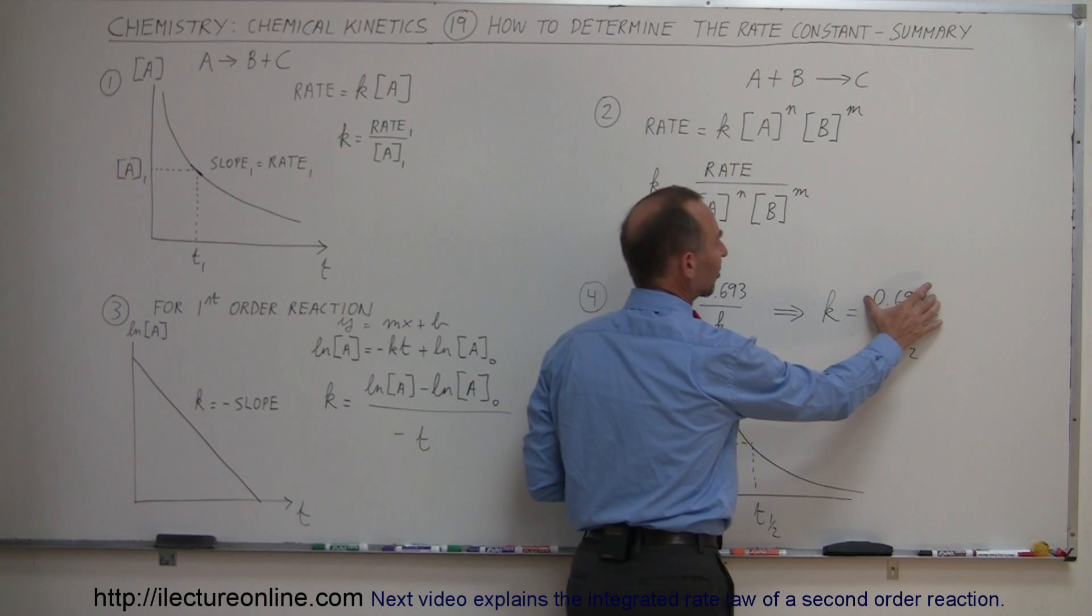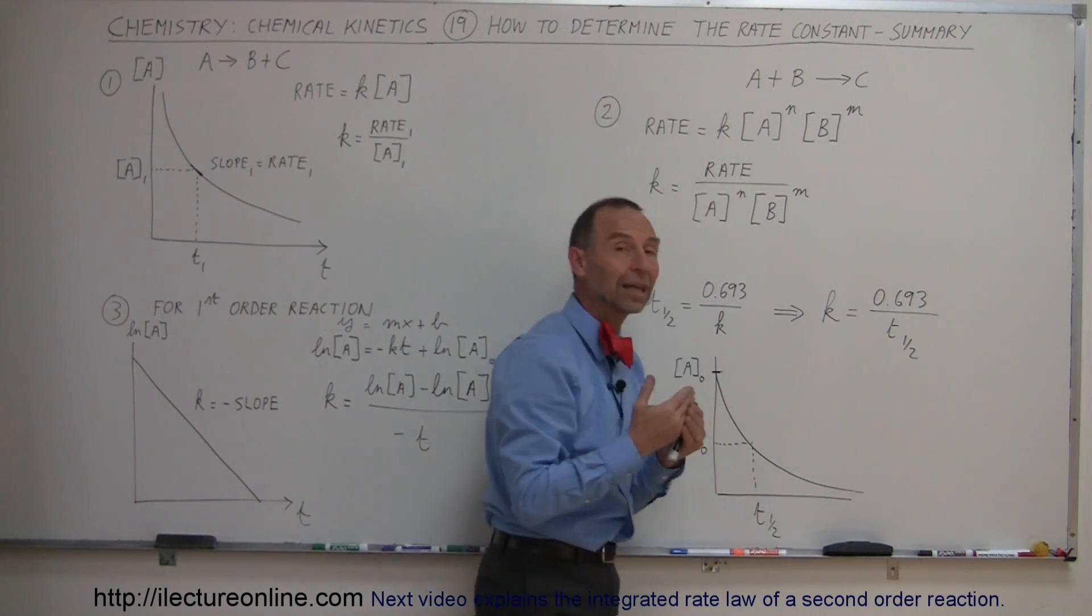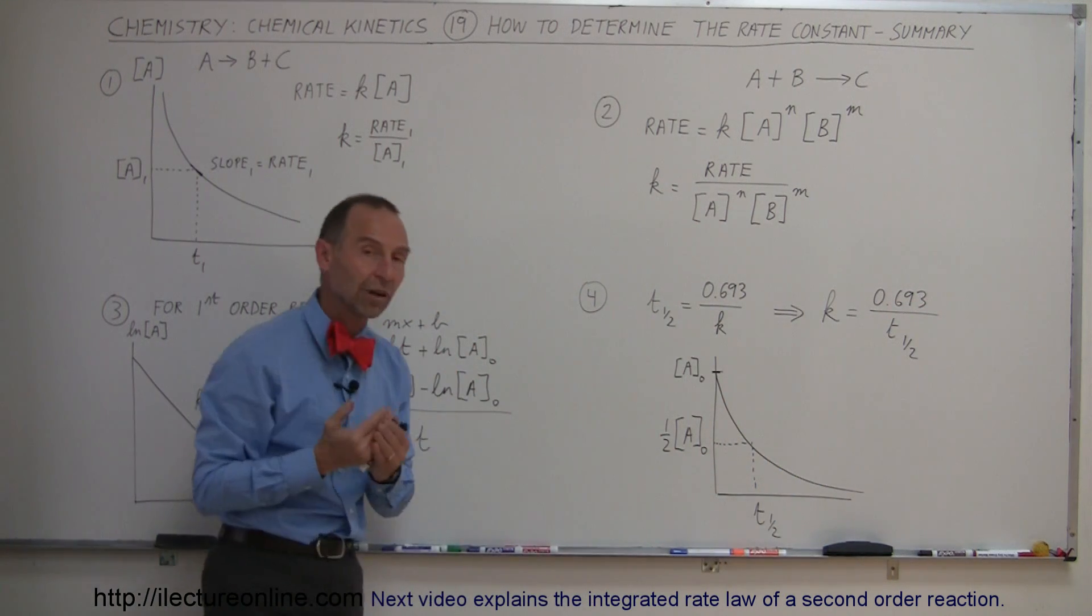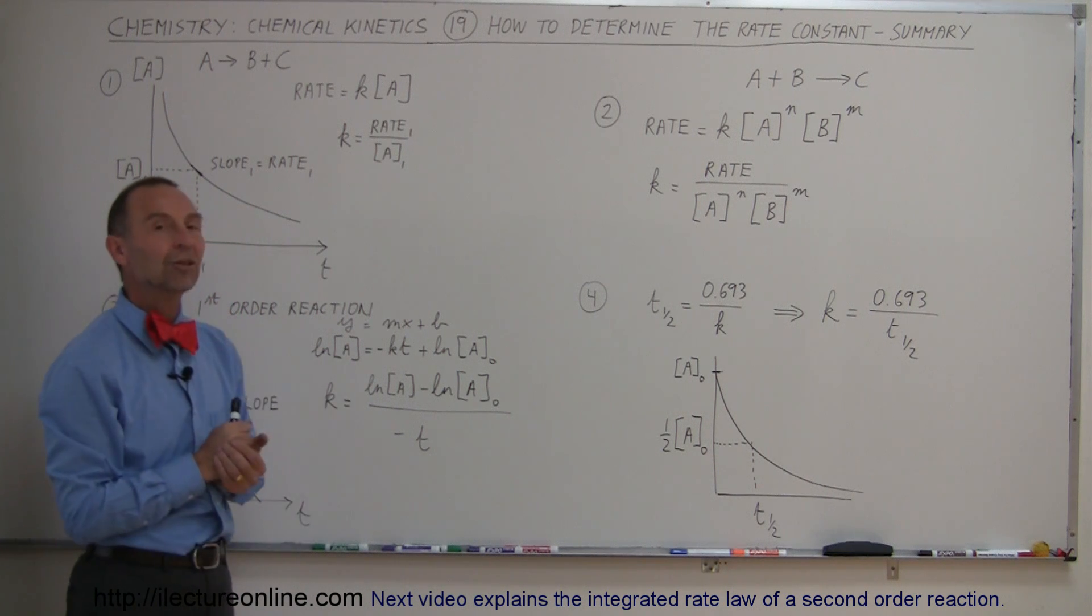We solve that for K, so we get 0.693 divided by how much time it took to get to only half of the original concentration of the reactant, and from that we can find K as well.